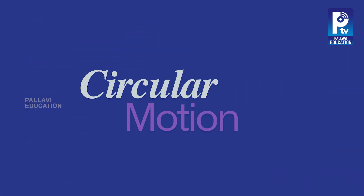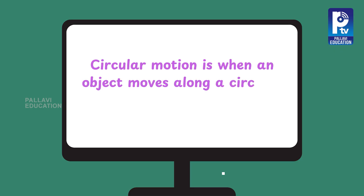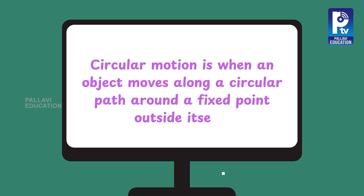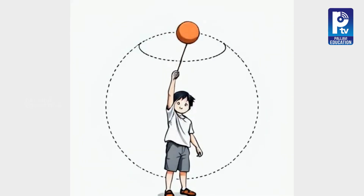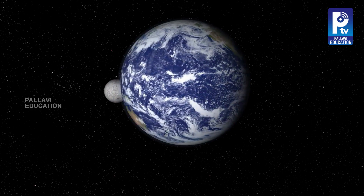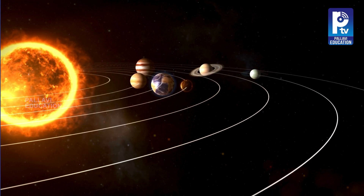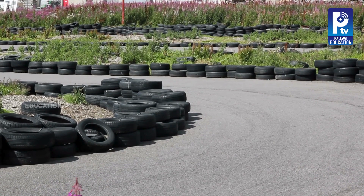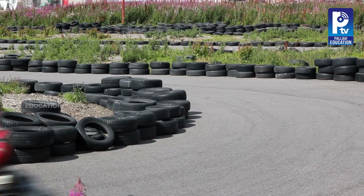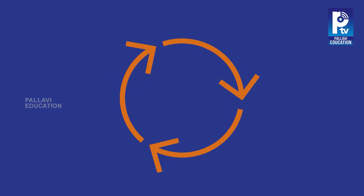Now, let's look at circular motion. Circular motion is when an object moves along a circular path around a fixed point outside itself. For example, if you tie a thread to a ball and whirl it around, the ball moves in a circle. Other examples are the Moon revolving around the Earth, or the Earth revolving around the Sun. A car moving along a circular racetrack is also experiencing circular motion — the object moves in a closed loop, constantly changing direction.